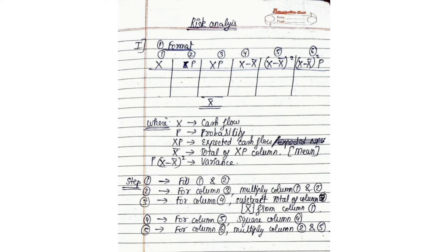In this voice note I am going to help you understand the risk analysis handwritten notes. So on the first page I have given you a format. In that format, first we have x — x is the cash flow that we have every year. You have to write the cash flow of every year there.